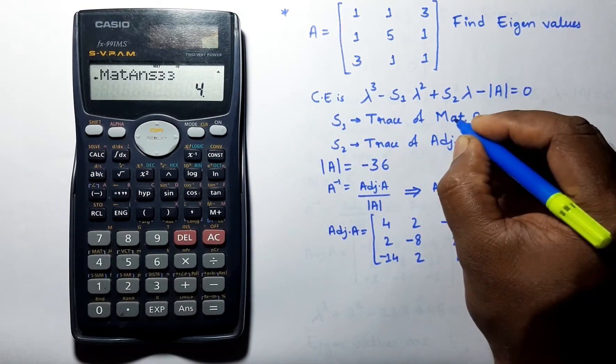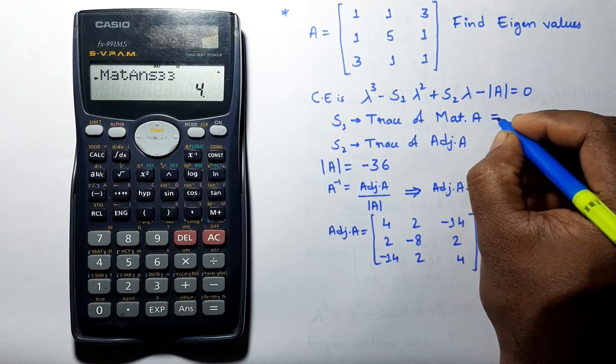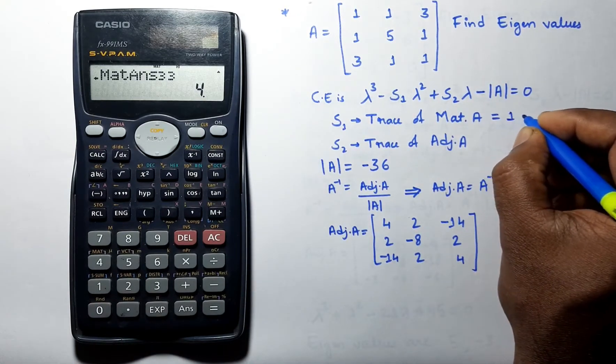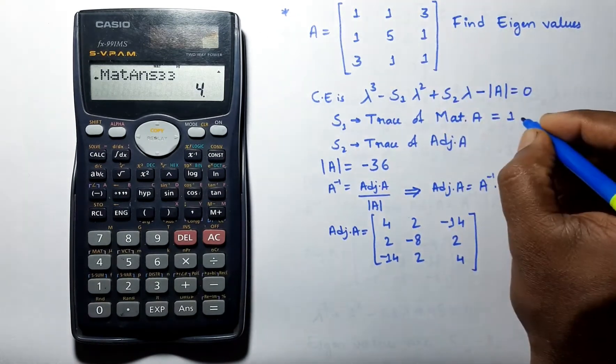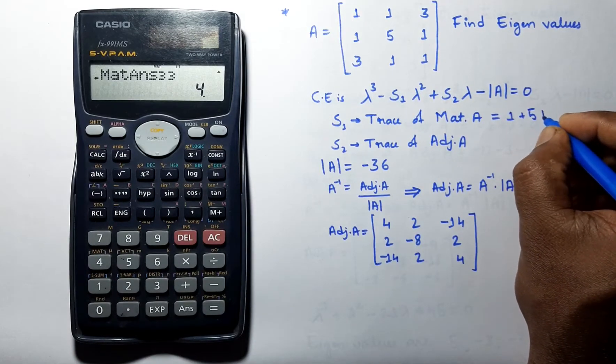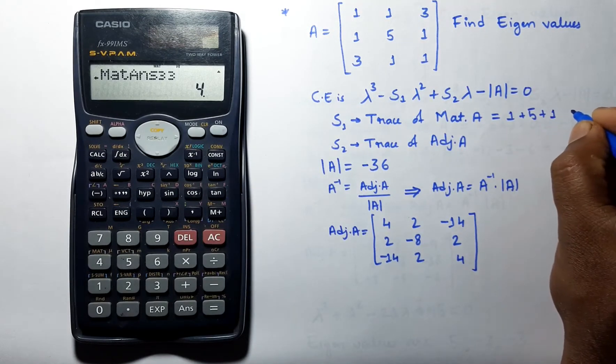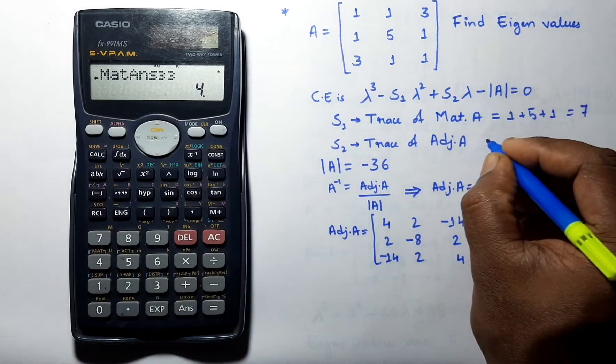Now we will find out the trace of matrix A. We will add 1 plus 5 plus 1, which is equal to 7.